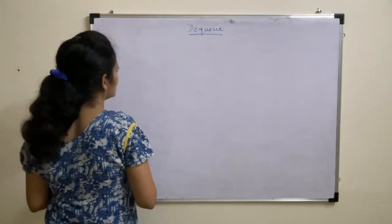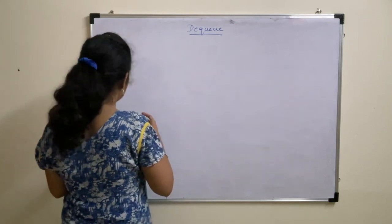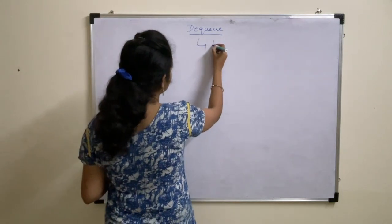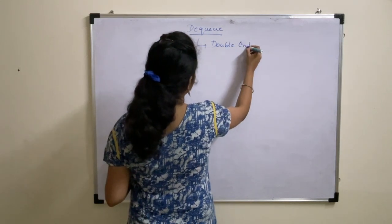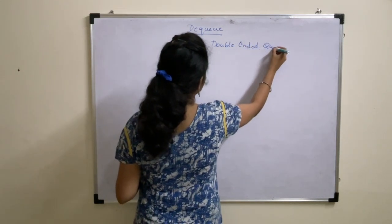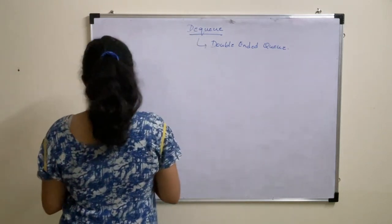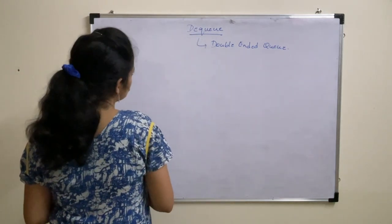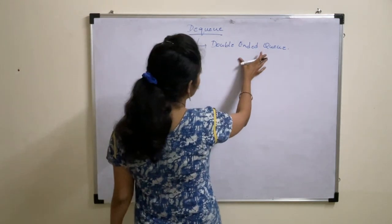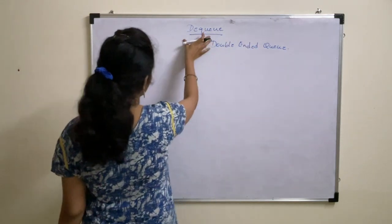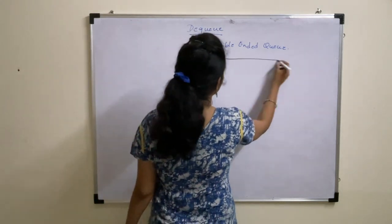We will see the third type of queue, which is DQ, also called as double-ended queue. The difference between the previous two queues — linear queue and circular queue — and how DQ is different from those remaining two types.